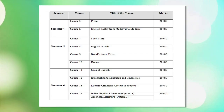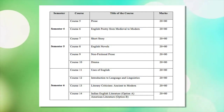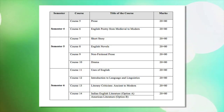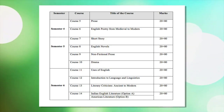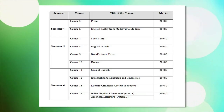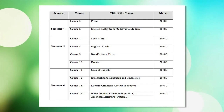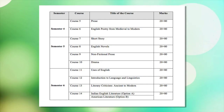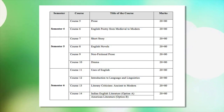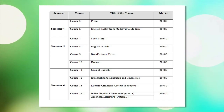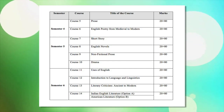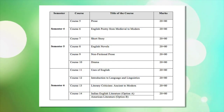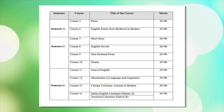In semester five, we have four papers: Short Story, English Novels, Non-Fictional Prose, and Drama. In the sixth semester, we shall deal with Uses of English, Introduction to Language and Literature, Literary Criticism from Ancient to Modern, and we have two optional papers.